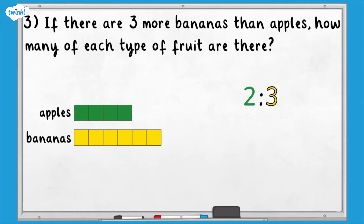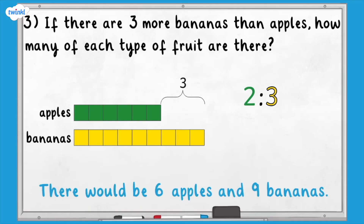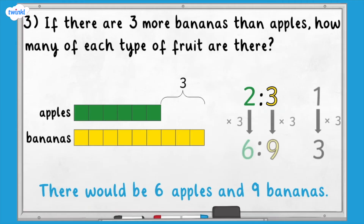We can add two apples and three bananas as these are the numbers in our ratio. Now we have four apples and six bananas — the difference this time is two. Let's repeat this by adding another set of two apples and three bananas. Now we can see that the difference between them is three, so there are six apples and nine bananas. This is how it would look without using the bar model. We know that the difference was three times greater, so we also need to multiply the numbers in the ratio by three.